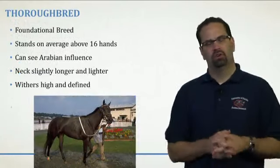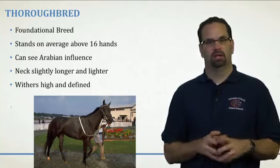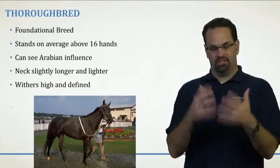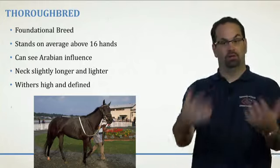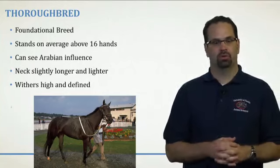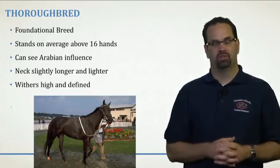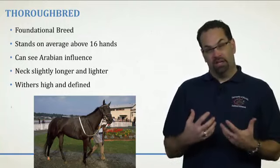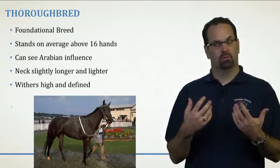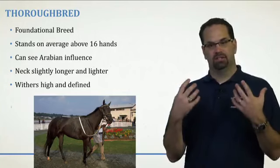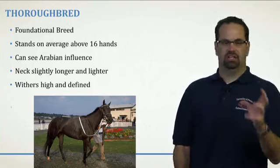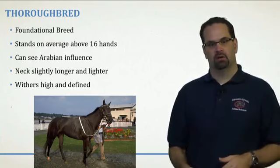Our next most popular or oldest may be the thoroughbred. The thoroughbred actually came from Arabian stock, but once the thoroughbred breed was established, it went on to help found other breeds like the quarter horse and Morgan horse and some saddle breeds. So the thoroughbred is also known as a foundational breed. The thoroughbred was bred for endurance — running long distances. In thoroughbred racing, they're typically running a mile up to a mile and a half. You can see some of the Arabian influences in them, but they're a little narrower in the chest.